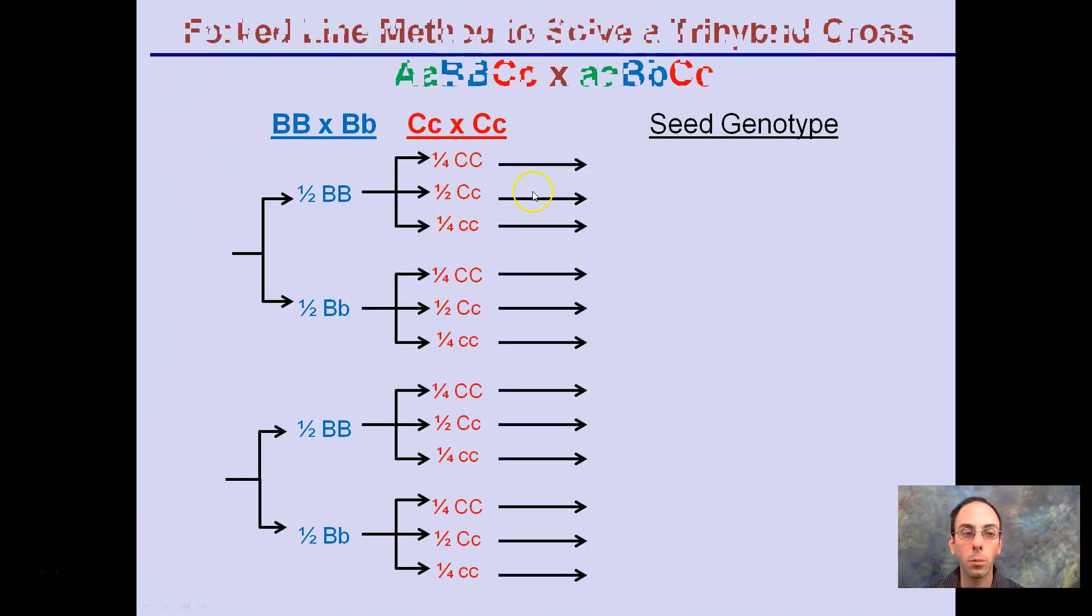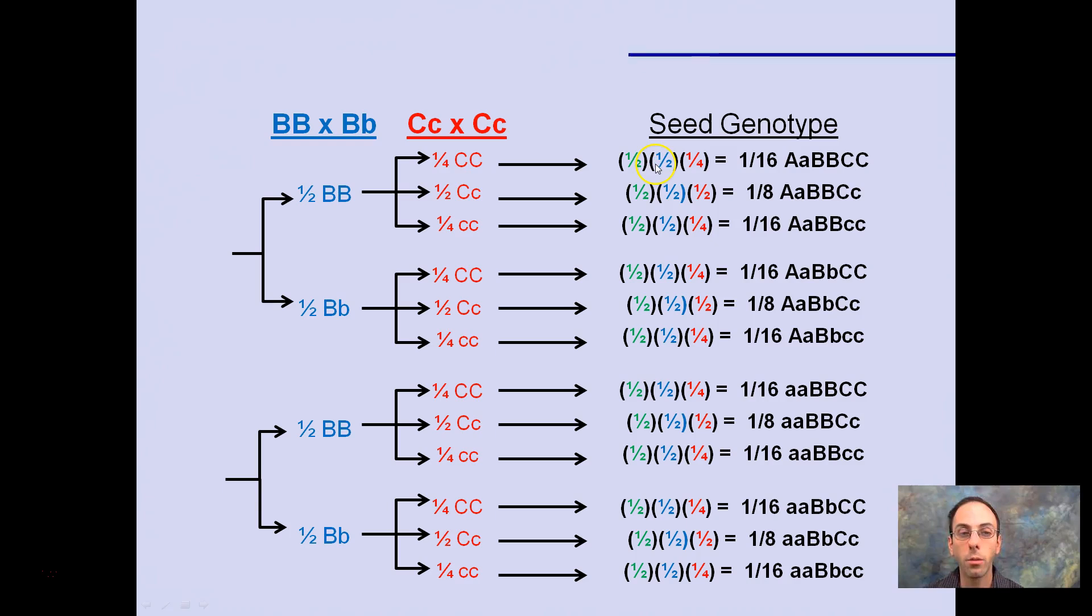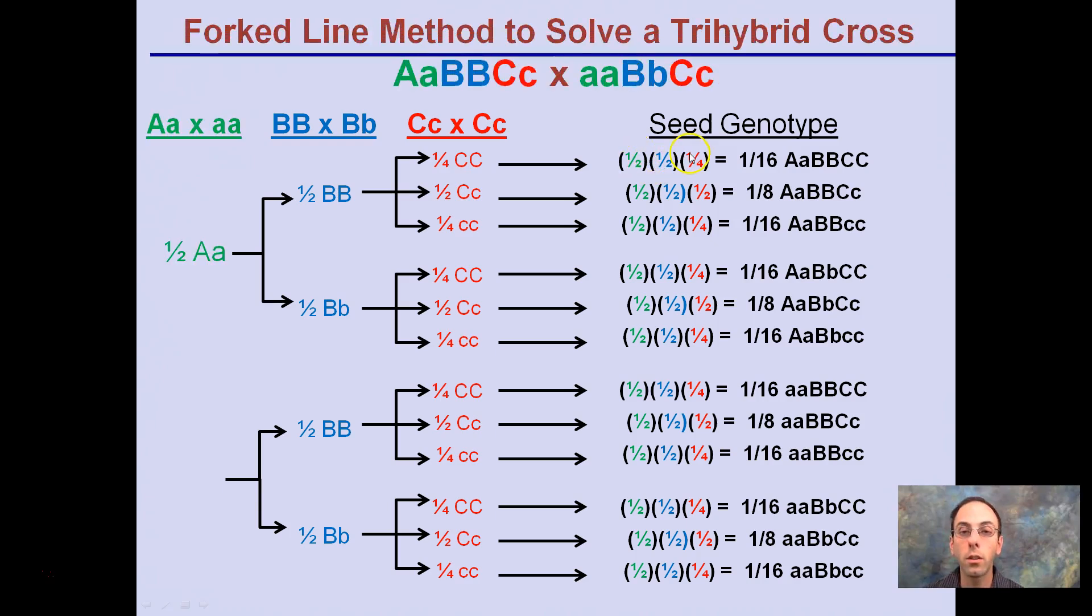Now, what we need to do, in order to get the C genotype, this is why this is called the forked line method, because it's a forked line, and we're going to go through, and we're just going to work these right across. So a half, a half, and a quarter. You'll notice a half times a half times a quarter is a sixteenth. And we also carry this genotype. So here's our heterozygous for A, represented right here, homozygous dominant here, and homozygous dominant for C, here.